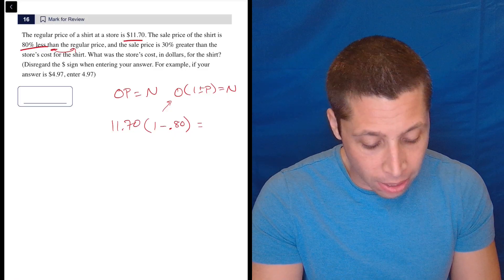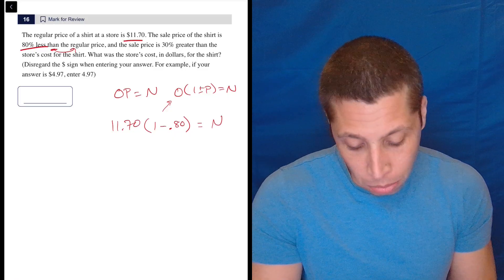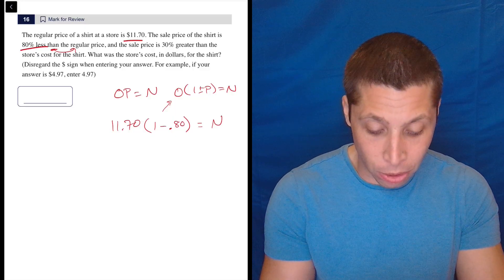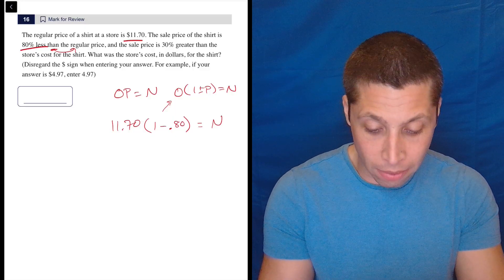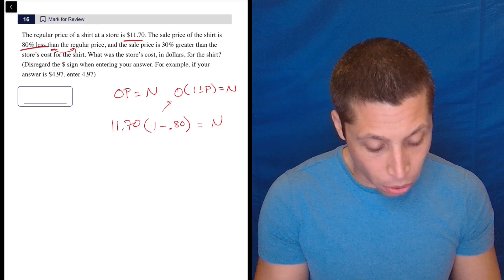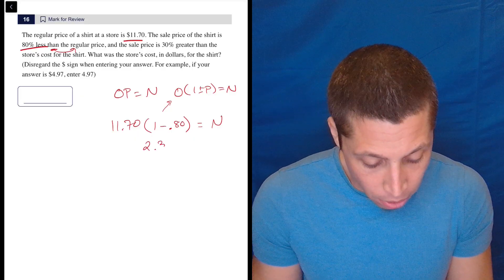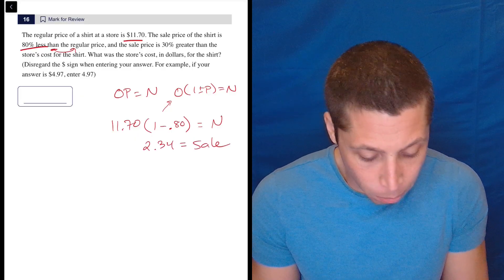And then we're trying to find the sale price. So that's the new value. So let's just do that. So one minus 0.8 is 0.2 and 0.2 times 11.70 is 2.34. So 2.34 is the sale price.